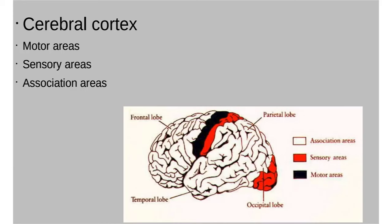Different parts of the cerebral cortex have different functions. Some of the cerebral cortex is devoted to the motor area — shown in black in this picture. Motor areas cause you to move things that you consciously move. When you decide to move your hands to write notes or get up to go get a bite to eat, those are your motor areas at work. Anything you consciously move involves the motor area.